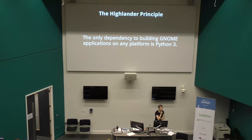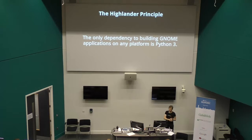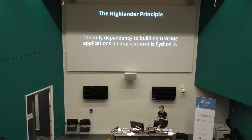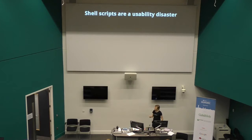This gives us something like the Highlander situation — the only dependency you need for building GNOME applications, maybe not today but very soon, is Python 3 and nothing else. At least for something like Core, where you just depend on GLib and one of these libraries. This makes everything massively simpler: you just install Python 3 and everything works. And you get rid of the shell, which is always a good thing.